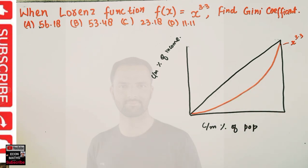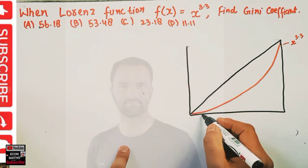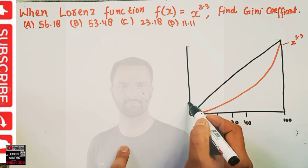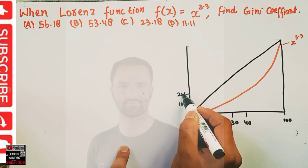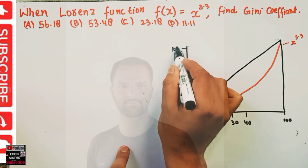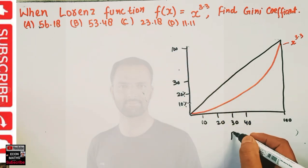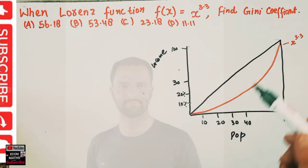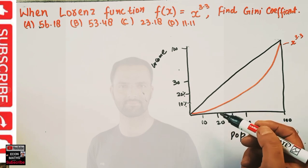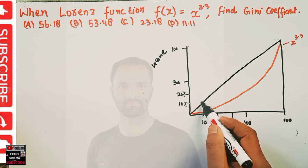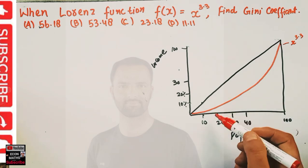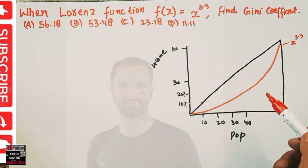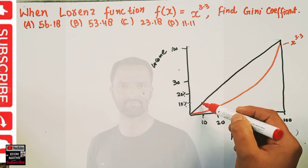On the x-axis we have cumulative percent of population — 10, 20, 30, 40, up to 100 percent. Similarly on the y-axis we have cumulative income — 10, 20, 30 percent, up to 100 percent. This black line shows us that 10 percent of the population gets 10 percent of income, 20 percent gets 20 percent, and 40 percent gets 40 percent of income — this shows perfect equality.